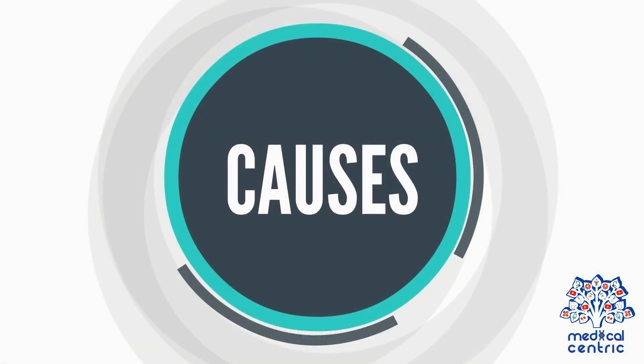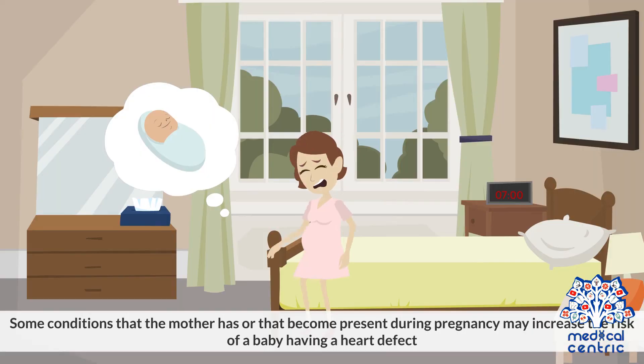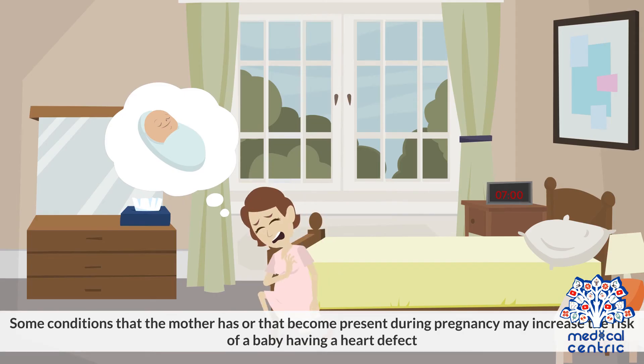It is believed that congenital heart defects arise from errors early in the heart's development, but there is often no clear cause. Genetics and environmental factors may play a role. Some conditions that the mother has or that may become present during pregnancy may increase the risk of a baby having a heart defect.